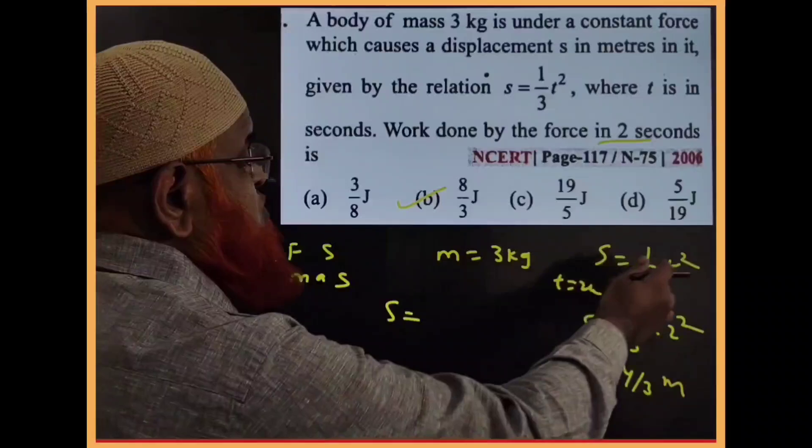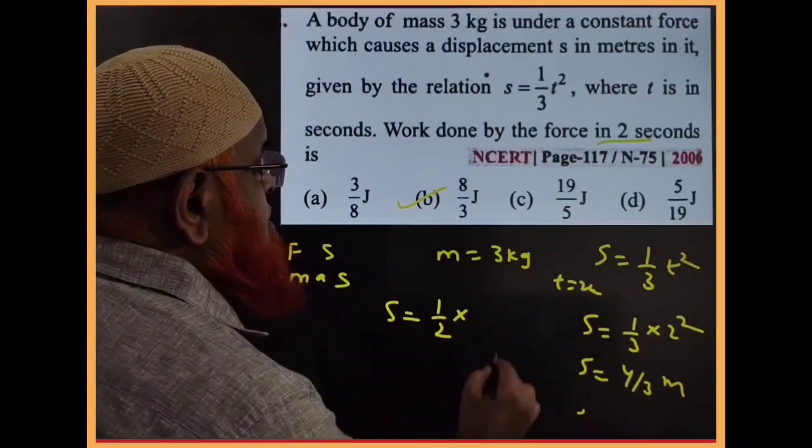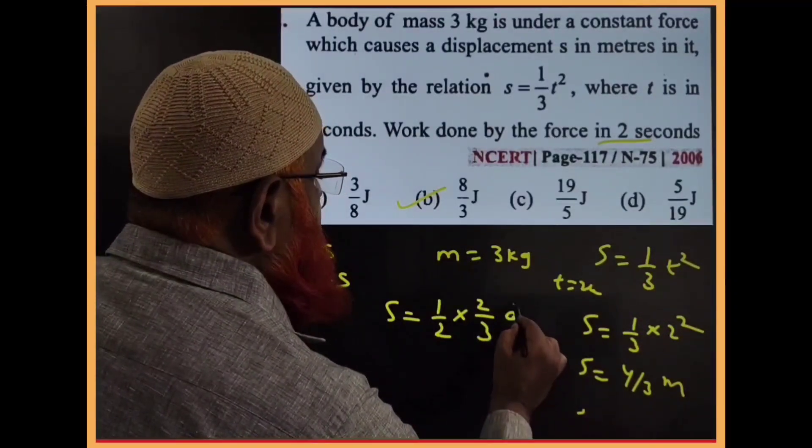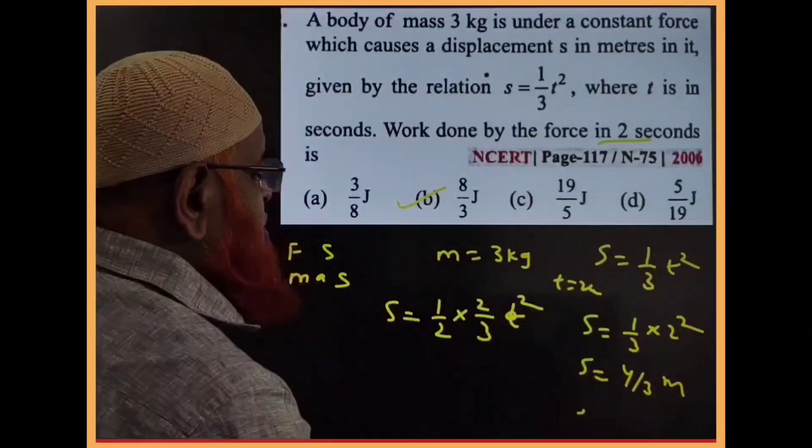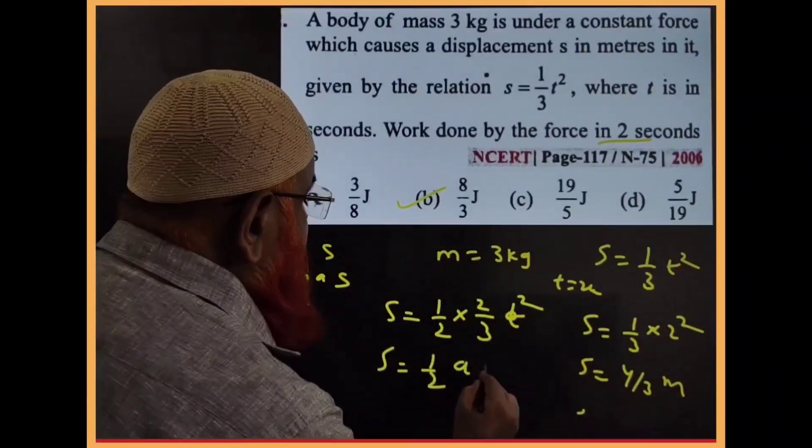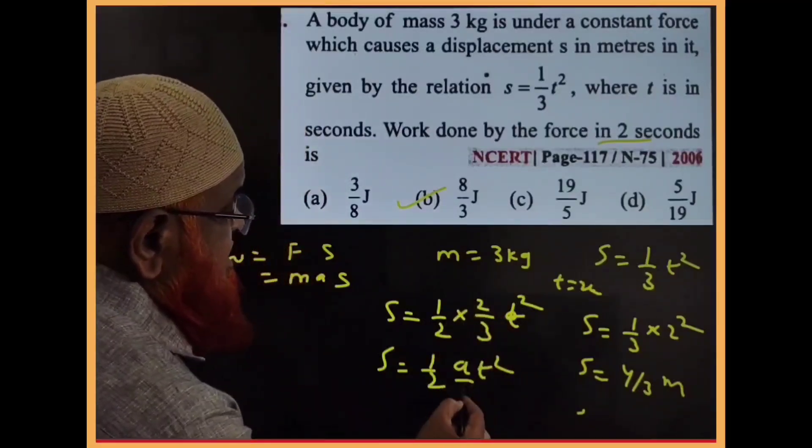This (1/3)t² I rewrite as (1/2) × (2/3) × t². I'm modifying it because this gives the same value. We write this as (1/2)at², from which it's understood that a = 2/3.